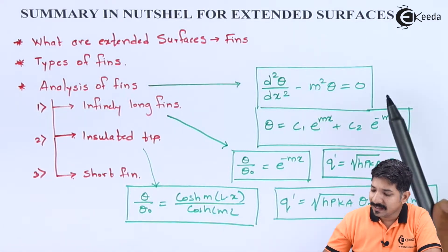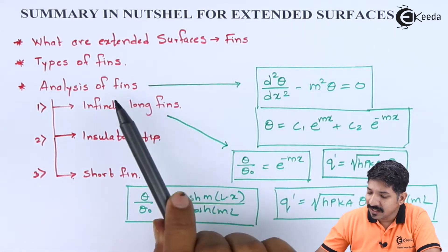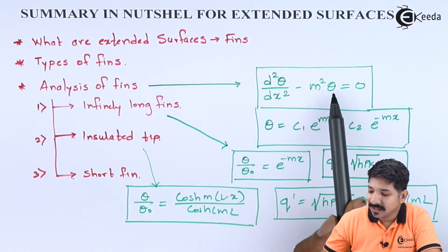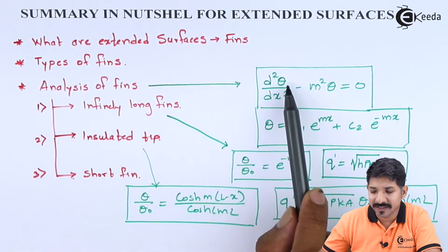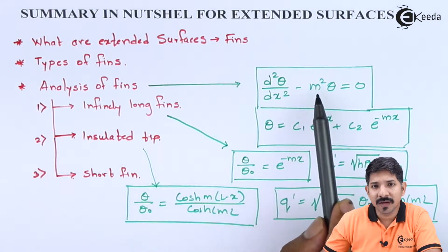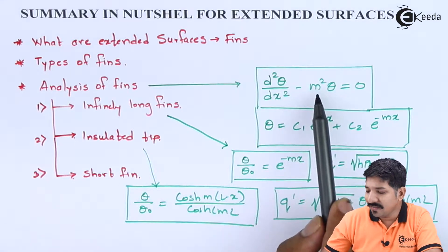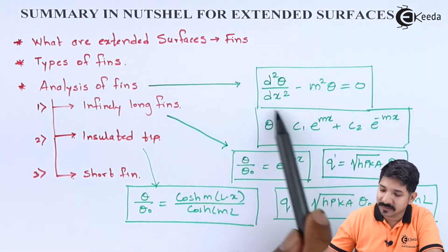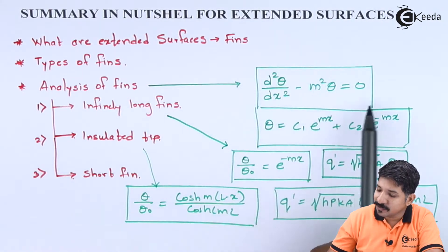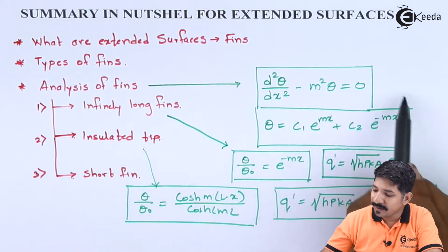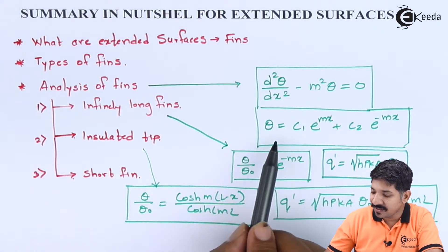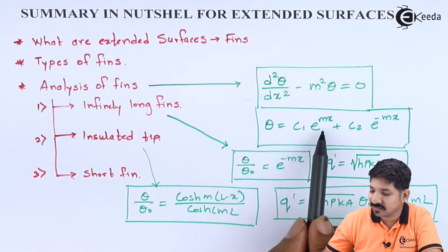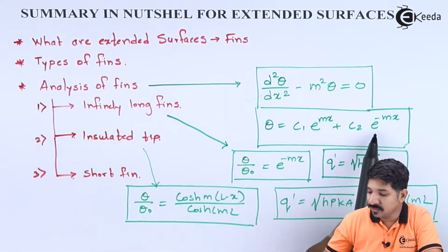For that fin, the equation we get at the end of the analysis is d²θ/dx² minus m²θ = 0, where θ is the temperature difference and m is a collection of variables. This is done for simplification — to get the differential equation in a format whose ready-made solution we know from mathematics: θ = C₁e^(mx) + C₂e^(-mx).